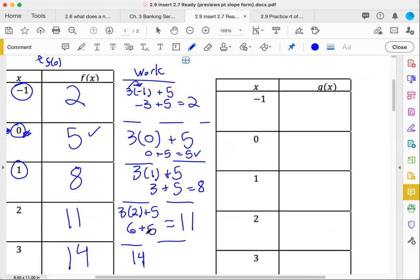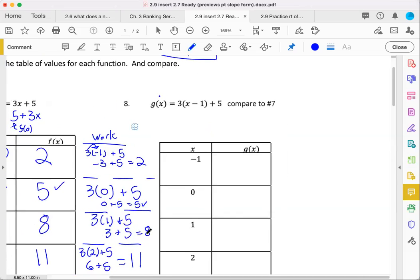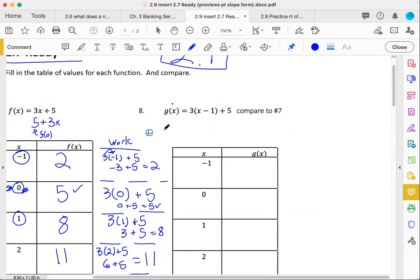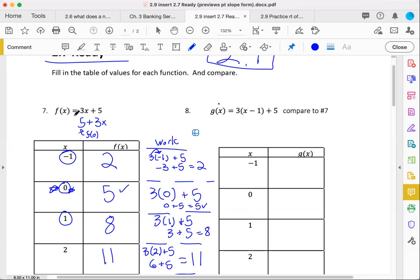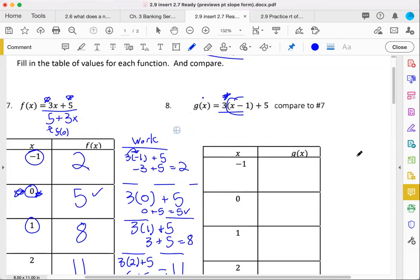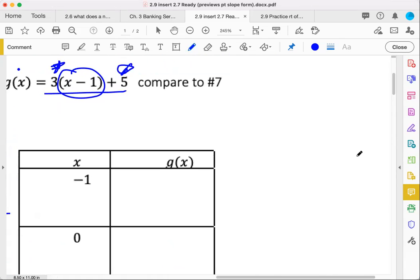But what do you think is going to happen over here with this function on the right? What looks different between these two? They both have 3 here and here. They both have x involved. They both end with 5 here and here. So let's see how this x minus 1, this rate of change, changes things up a little bit. So same song and dance. We'll plug in some values.